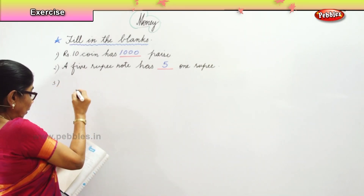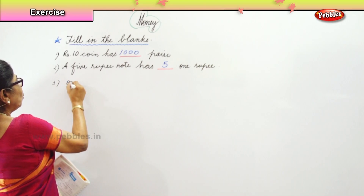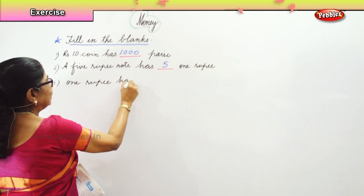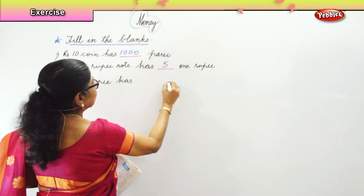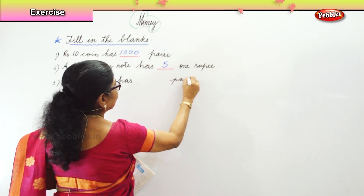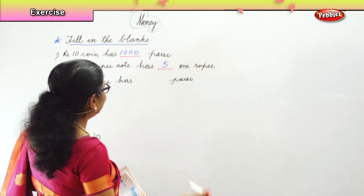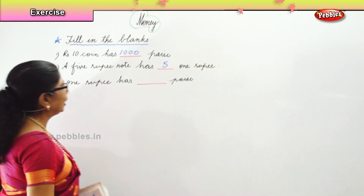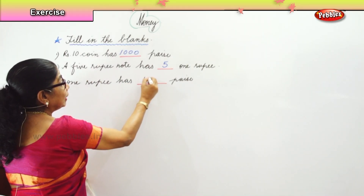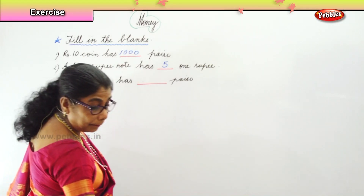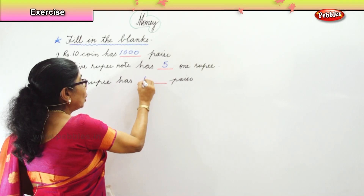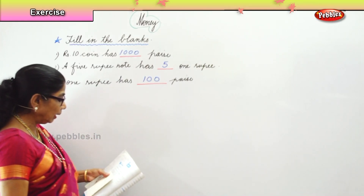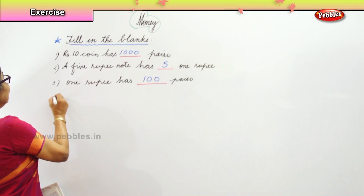Next: 1 rupee has dash paise. 1 rupee has how many paise? 1 rupee is equal to 100 paise. 1 rupee has 100 paise. Alright, next.